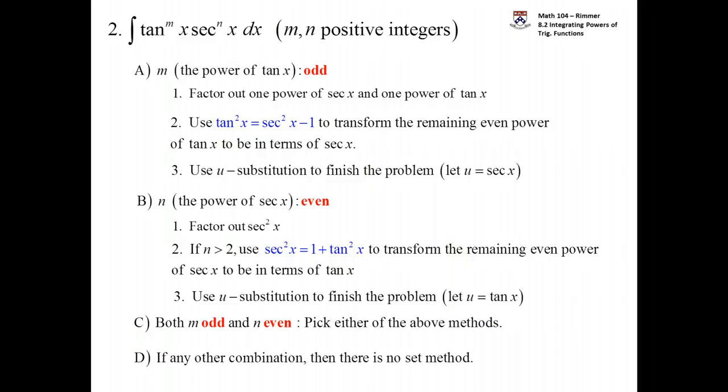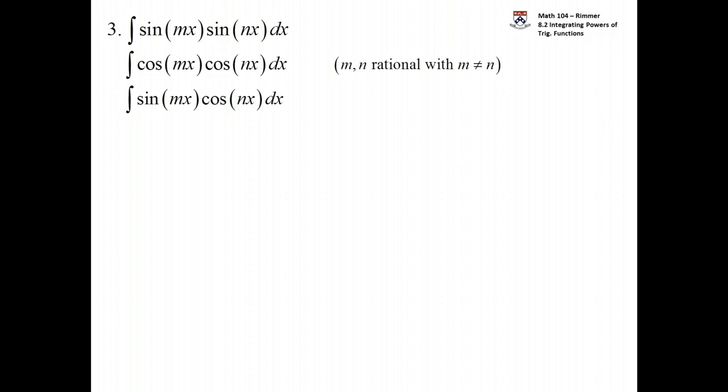And finally, we just need to see how to deal with multiples of x. So the sine of mx and the sine of nx, where m and n are different. The cosine of mx and the cosine of nx, where m and n are different. They just need to be rational numbers. They don't have to be integers. They can be any rational. They can be fractions.